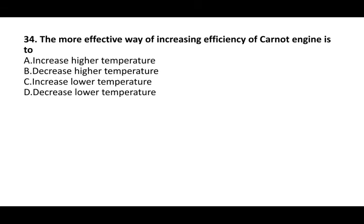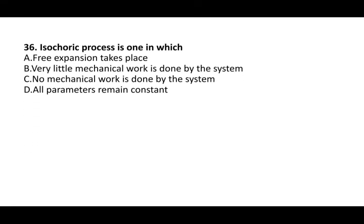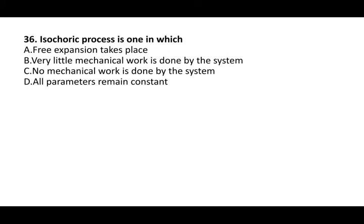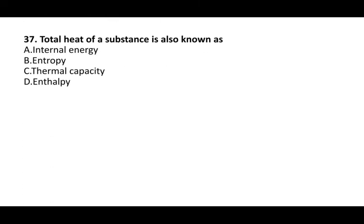Next question: the more effective way of increasing the efficiency of a Carnot engine is to decrease the lower temperature. Next question: for a reversible adiabatic process, the change in entropy is zero. Next question: an isochoric process is one in which no mechanical work is done by the system. Next question: the total heat of a substance is known as enthalpy.